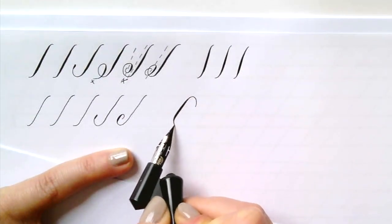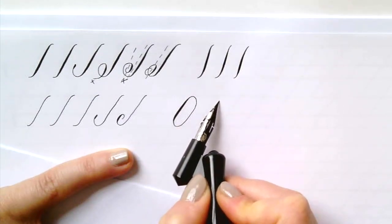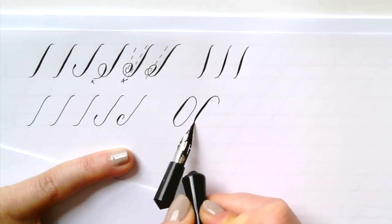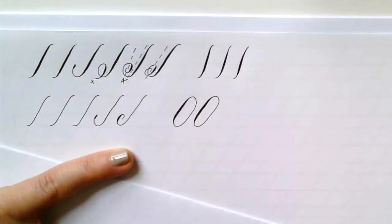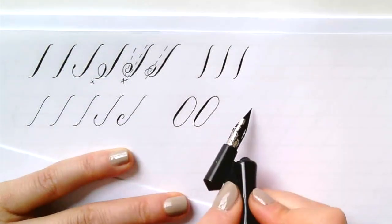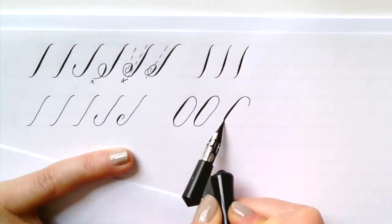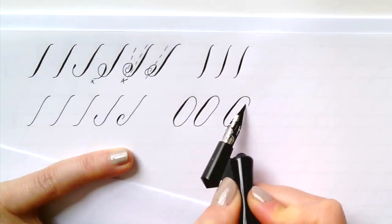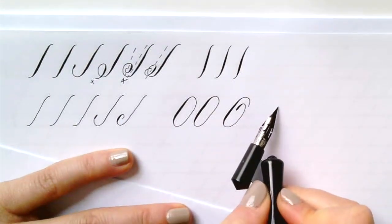The oval we already know, and it's basically the same shape in the uppercase letters as well. Perhaps a little rounder, and it has a little more width, and the O letter actually kind of curves inward like that.